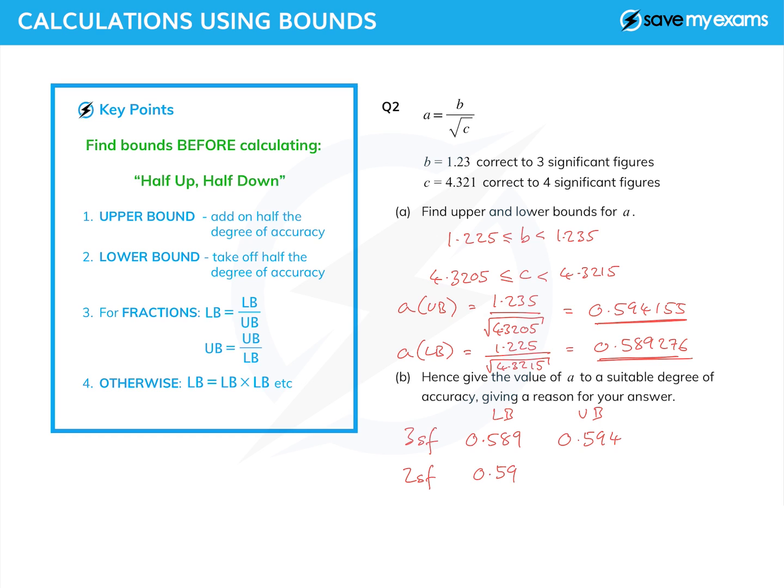And so we can say a is 0.59 to two significant figures, or two decimal places, as the lower bound equals the upper bound at that accuracy.